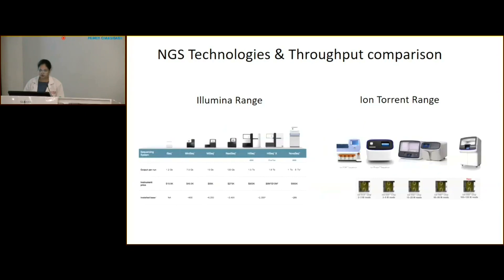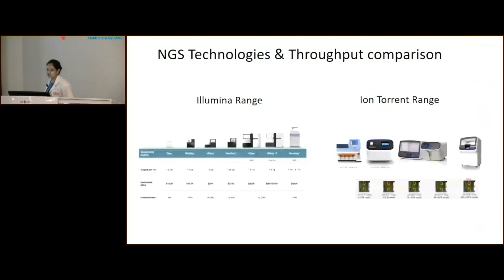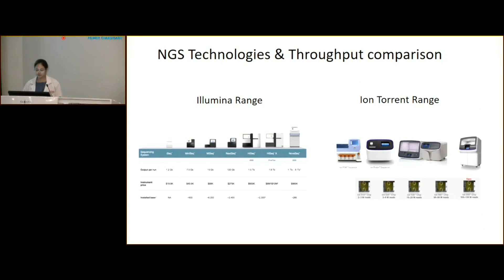Different NGS platforms vary by output. We currently have the Ion Torrent IonS5 instrument in our department, used for gene panel sequencing, accompanied by the Ion Chef for experimental workflow. We are also expecting to add an Illumina platform to our department soon.